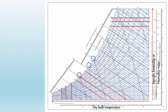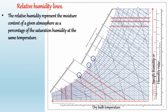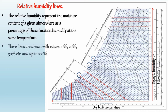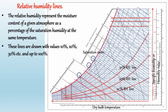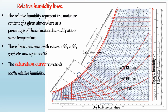The next line is the relative humidity line. Relative humidity represents the moisture content of a given atmosphere as a percentage of the saturation humidity at the same temperature. In the psychometric chart, curved lines show the relative humidity lines. These lines are drawn with values such as 10%, 20%, 30%, up to 100% relative humidity. The 100% relative humidity line represents the saturation curve. The values of relative humidity lines are given along the lines.